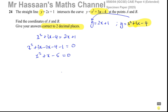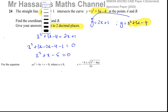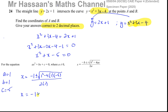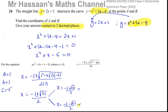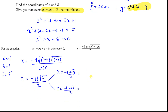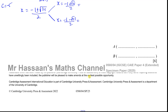Applying the formula: x equals minus 1 plus or minus the square root of 1 squared minus 4 times 1 times negative 5, all over 2 times 1. That simplifies to minus 1 plus or minus the square root of 21, over 2. So the two x values are x equals minus 1 plus root 21 over 2, and x equals minus 1 minus root 21 over 2.